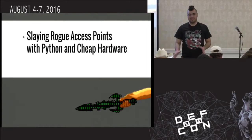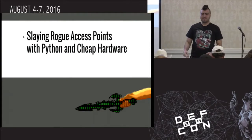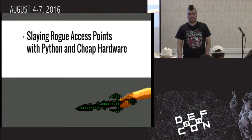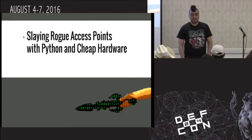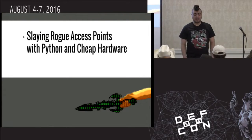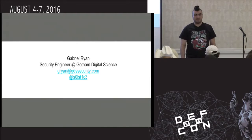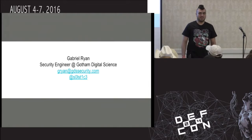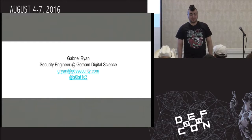This talk is about rogue access point attacks, but more on the defensive side. We go into some of the offensive stuff, but a lot of that's already been done before. This is more of a talk on how to identify rogue AP attacks and also some preventative measures you can use to mitigate them. I'm Gabriel Ryan, a security engineer at Gotham Digital Science. We do pen testing and secure source review.